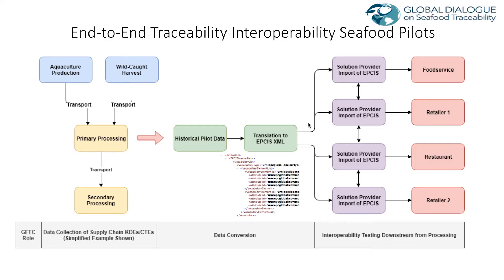Here we show what the overall process looked like. We collected the historical data that Thai Union already captures in their internal systems. We structured that data in accordance with the GDST standard — both the key data elements required in the basic universal list, and housing them in a machine-readable format, which in this case is EPCIS XML. EPCIS stands for Electronic Product Code Information Systems, and it's a special type of XML that encodes logistics information.